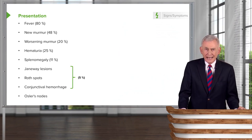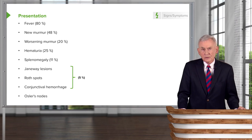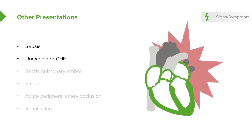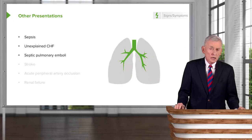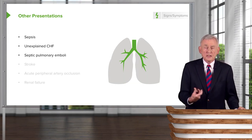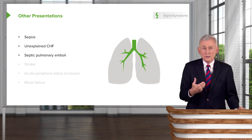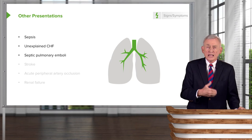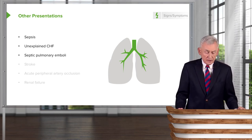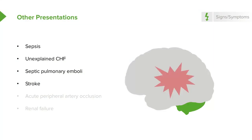Other presentations that should raise your suspicion include sepsis for no apparent reason, congestive heart failure for no apparent reason, and septic pulmonary embolus — common in IV drug users who are injecting via arm veins, causing organisms to lodge in the lower lobes of the lungs and produce abscesses. Those organisms can also gain access to the left side of the heart. A stroke in a young person, especially with fever, should make you think of endocarditis.